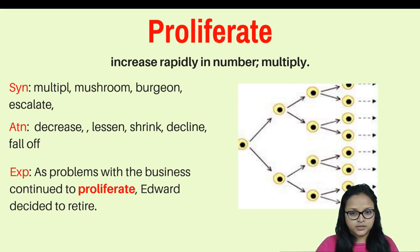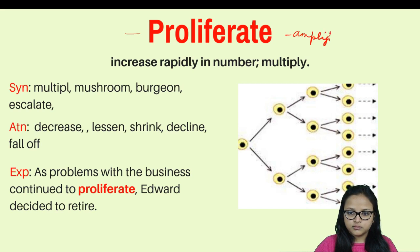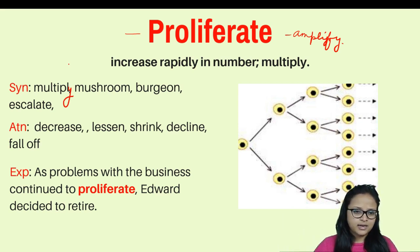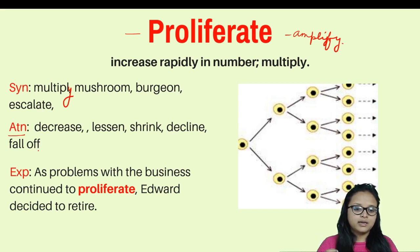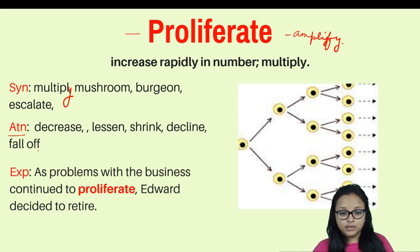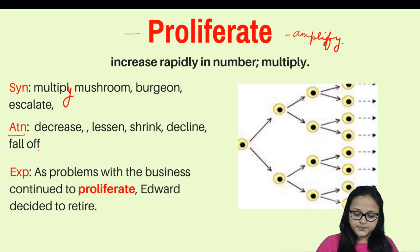The next word is 'proliferate,' which is another word for amplifying — it means to increase in number very quickly and rapidly. Synonyms are: multiply, mushroom, escalate, and expand. Antonyms are: decrease, shrink, decline, and fall off. Example: As problems with the business continued to proliferate, Edward decided to retire — meaning as problems continued to multiply, he decided to quit.